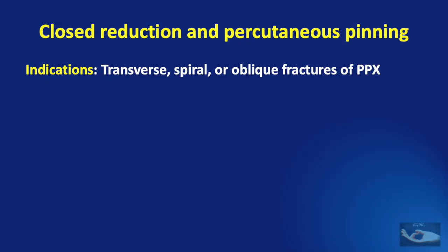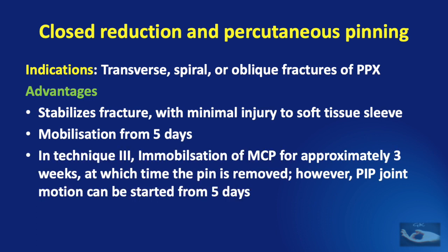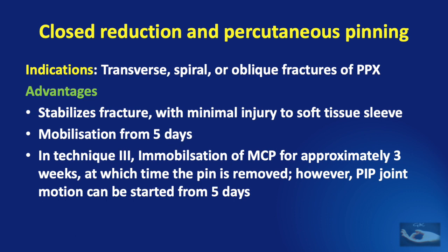Closed reduction and percutaneous pinning can be done for transverse, spiral, or oblique fractures of the proximal phalanx. The obvious advantages are that the fracture is stabilized with minimal injury to the soft tissue sleeve and mobilization can be started from five days post-operatively — except in technique 3, where immobilization of the metacarpophalangeal joint will be required for three weeks till the pin is removed. However, proximal interphalangeal joint motion can be started from five days. Good or excellent results have been reported in 90% of fractures treated within five days of injury.